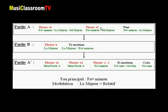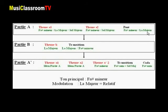Le second élément du thème A, donc A2, commence lui également en fa dièse mineure et conclut sur l'accord de sol majeur, également le ton de la sixte napolitaine. Pour conclure cette partie A, nous trouvons le pont, qui est lui aussi dans la tonalité générale de ce mouvement, c'est-à-dire fa dièse mineure, et qui va peu à peu s'orienter vers la majeure pour nous préparer à la seconde partie, c'est-à-dire le deuxième thème, qui lui est en la majeure, c'est-à-dire le ton relatif de fa dièse mineure.